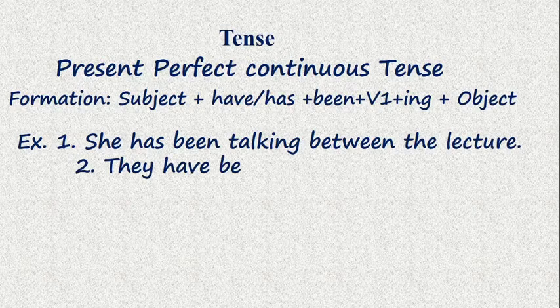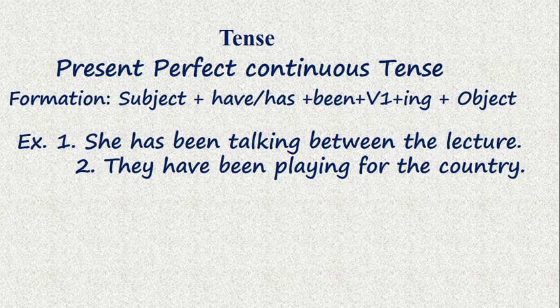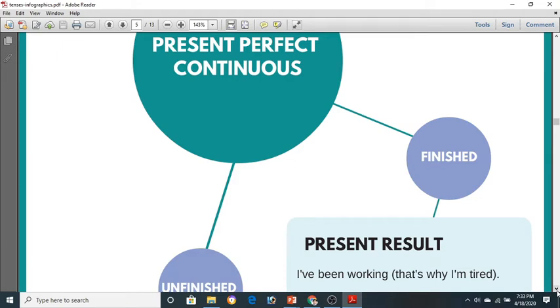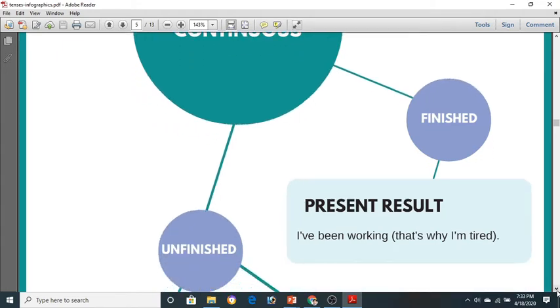Now we are going to discuss the uses of present perfect continuous tense. To show the result, to show that finished work has a present result. For example, I have been working, that's why I am tired.